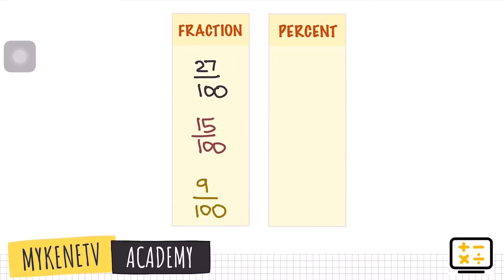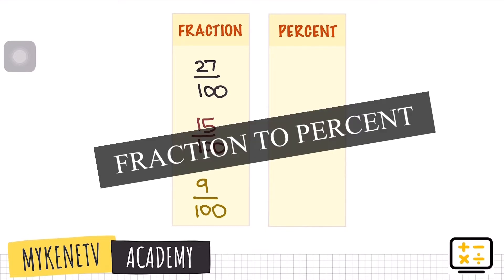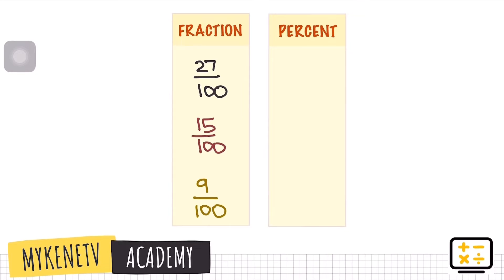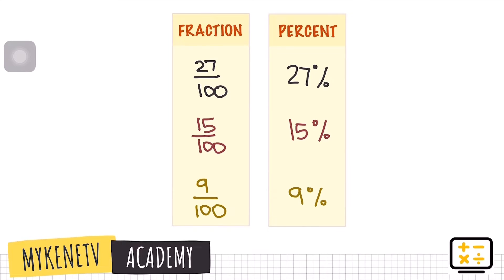Now let us try to reverse it. From fraction, let us try to write it as a percentage. For example, if we have 27 over 100, we just use the numerator and add our percent sign — so that's 27 percent. How about 15 over 100? That's just 15 percent. And 9 over 100? That's just 9 percent.